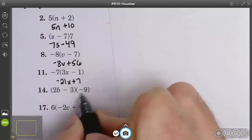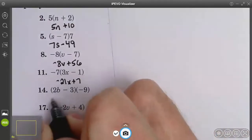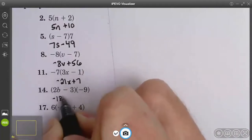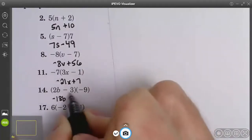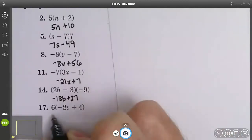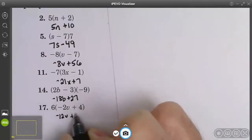Here are my distributors on the right. Negative 9 times 2b is negative 18b. Negative 9 times negative 3 is positive 27. Number 17. 6 times negative 2v is negative 12v, and 6 times 4 is 24.